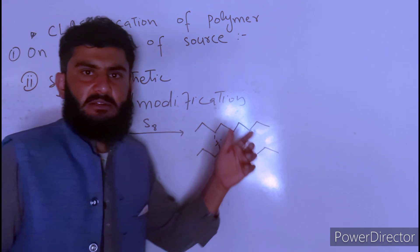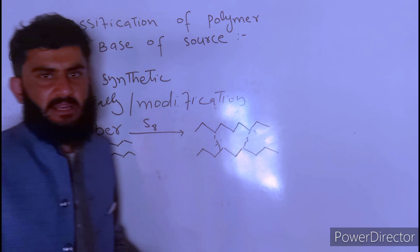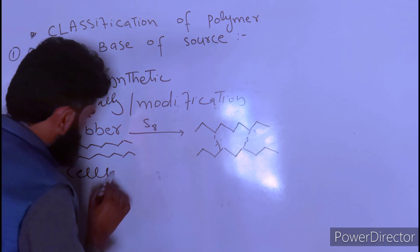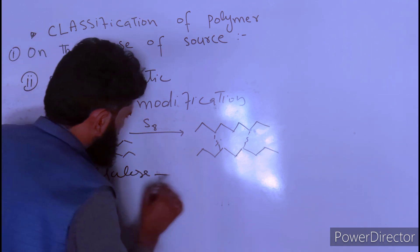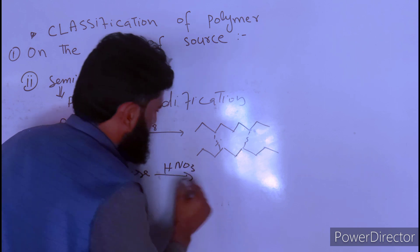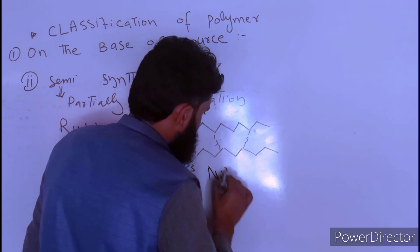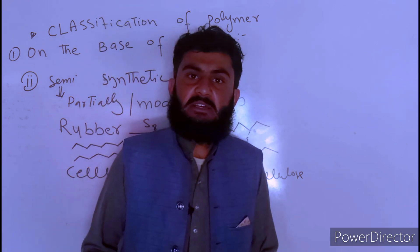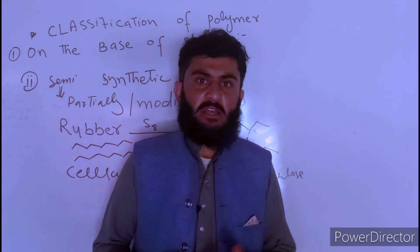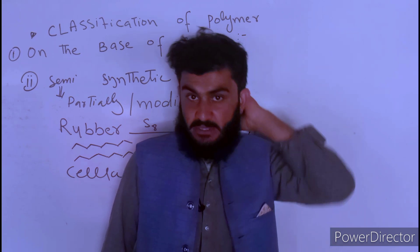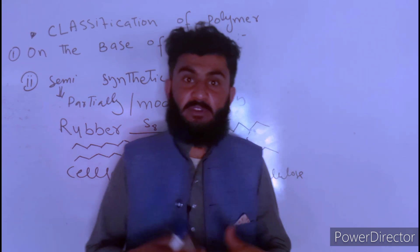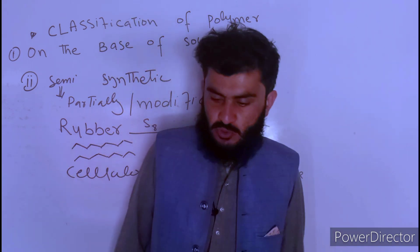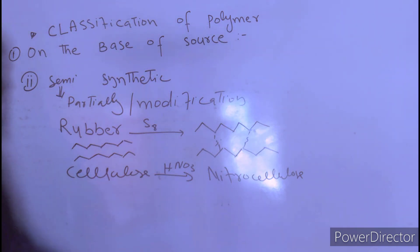Such a polymer obtained by modification of a natural polymer is called a semi-synthetic polymer. Another example is cellulose: when we treat cellulose with HNO3, we convert it into nitrocellulose, which is a semi-synthetic polymer.